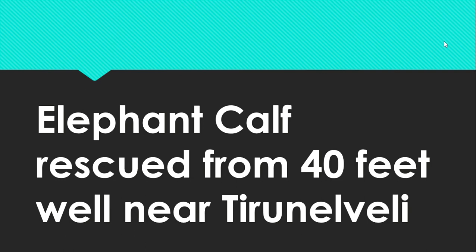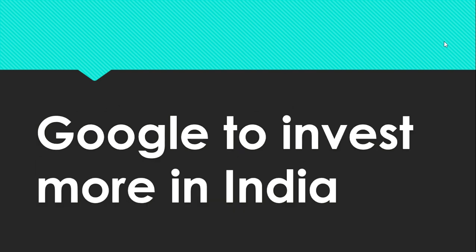The third example: 'Elephant calf rescued from 40-feet well near Tirinal Valley.' The expanded form: 'An elephant calf which fell into a forty-feet-deep well near Tirinal Valley was rescued by forest officials.' Notice the use of 'an' before 'elephant' because it starts with a vowel, and the number is written in word format — 'forty'.